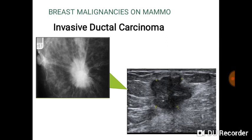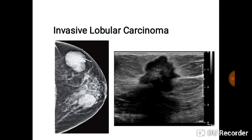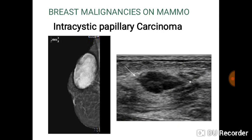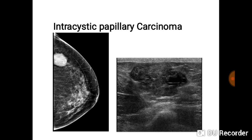We can see some examples of breast malignancies on mammograms. Recall invasive ductal carcinoma, which we saw on ultrasound — here we put them side by side so you can see how it appears on a mammogram and how it appears on a sonogram. That's the essence of correlation. You can also see invasive lobular carcinoma, comparing its appearance on the mammogram to the sonogram lecture image. This is the intracystic papillary carcinoma, and you can see the way it appears on a mammogram.